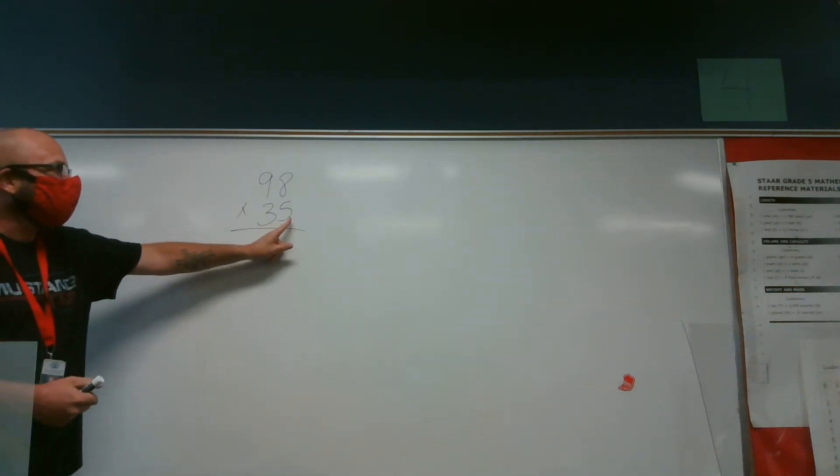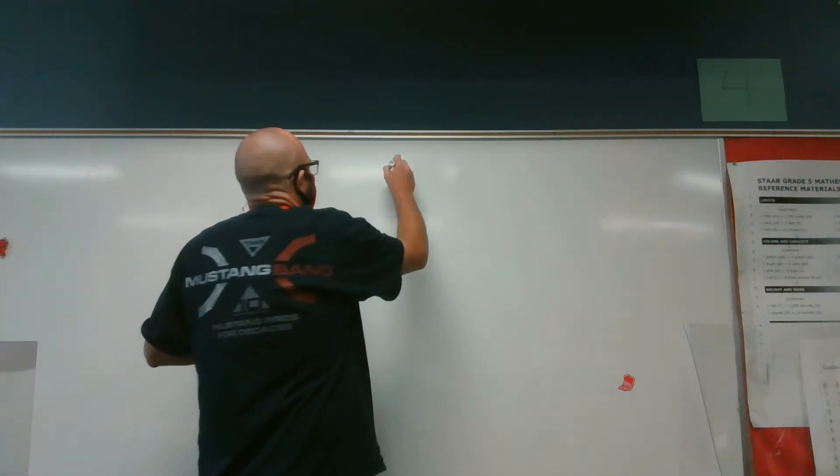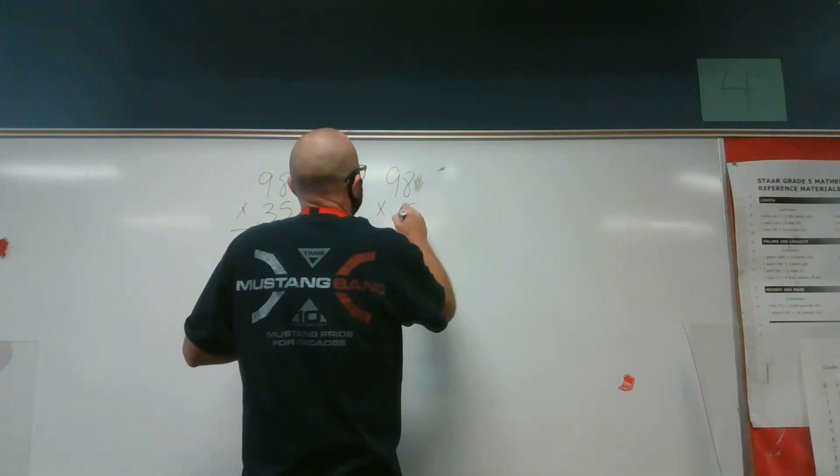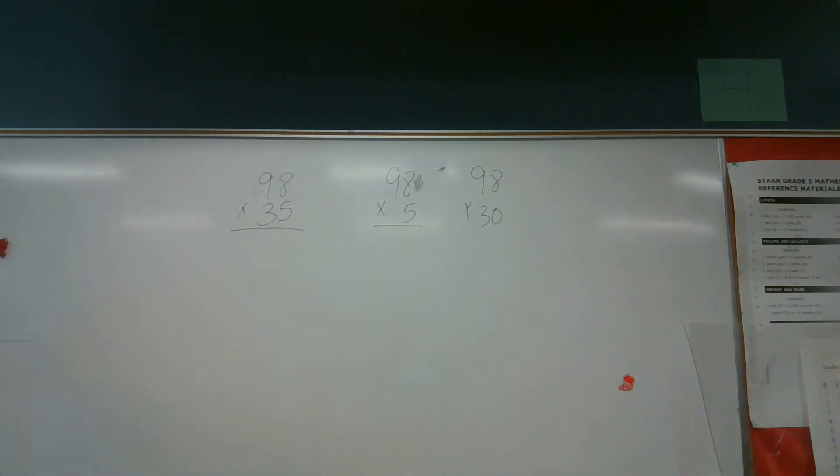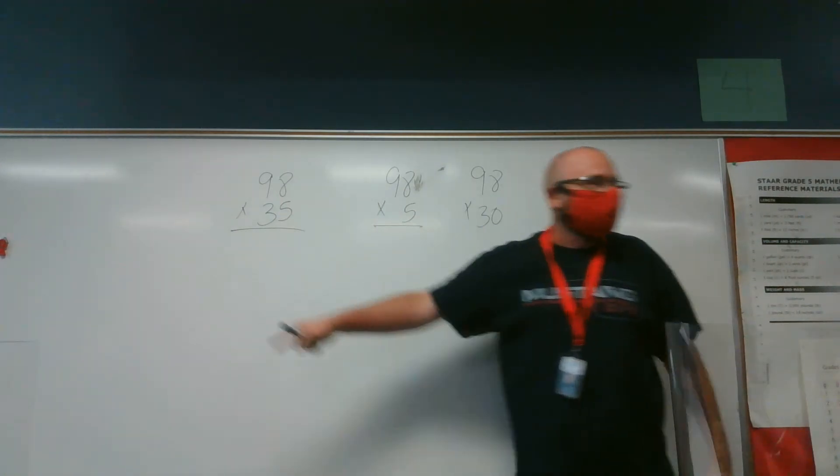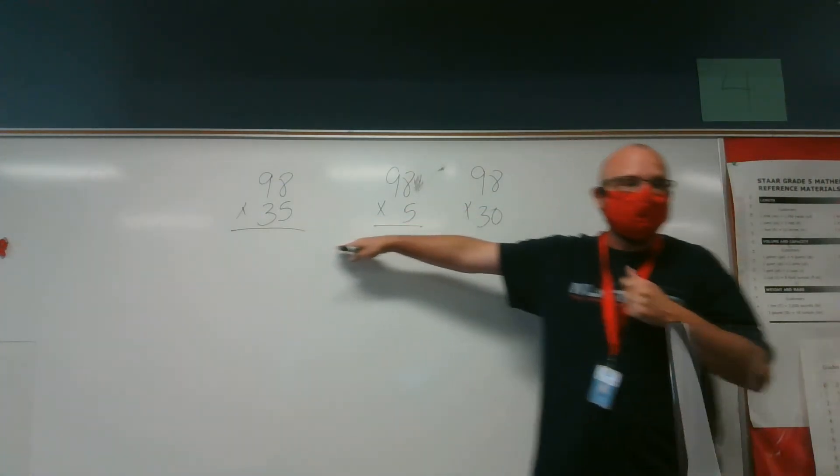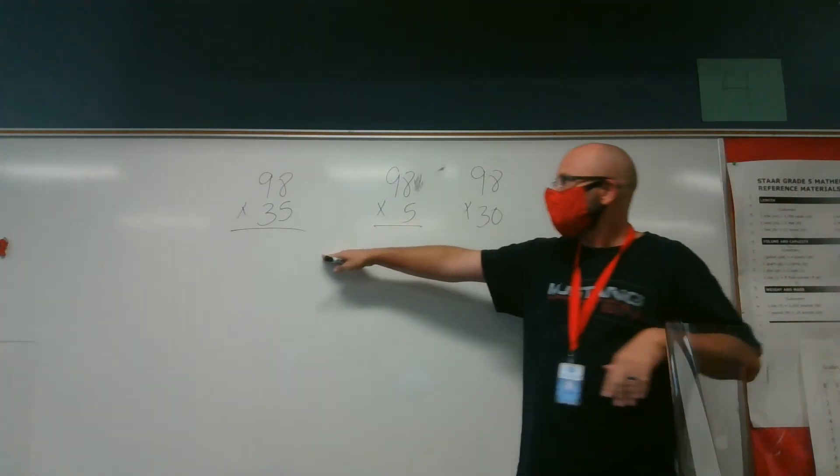And again, if I want to break 35 down in expanded form, I would have 98 times 5 and 98 times 30. Because 30 and 5 make 35. So if you want to break it apart that way, that's fine. That's what we're doing here, though. We're breaking it apart that way. We're breaking it apart right here is the exact same thing we're doing as right here. Make sense?